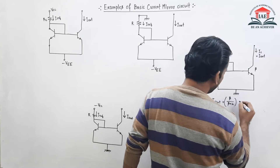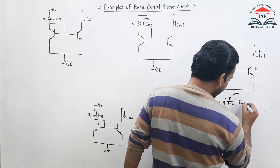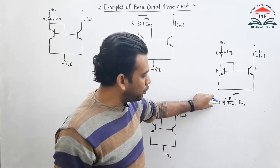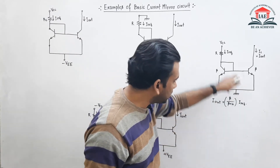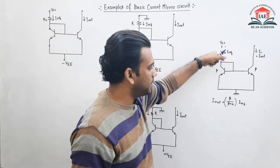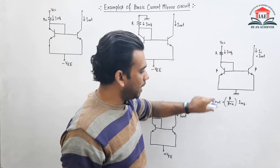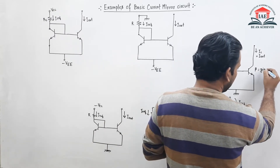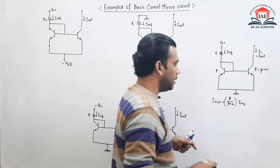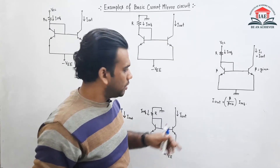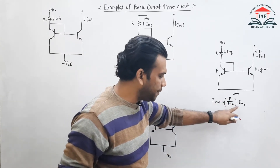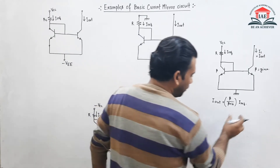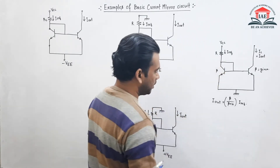To find the value of I out, we first need to find the value of the reference current I reference. Beta will be given in the exam, so we can put the value of beta directly. What we need to determine is the value of I reference.